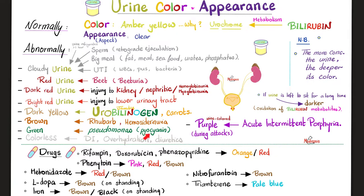Pseudomonas aeruginosa has pyocyanin pigment — it's greenish-bluish because 'cyano' means blue and 'pyo' means pus — and it can make my urine blue-green. If my urine is colorless, that's very diluted urine. This could be from drinking too much water, including psychogenic polydipsia, diabetes insipidus, or taking diuretics. If the urine is purple or wine-colored only during acute episodes, this is acute intermittent porphyria — it's an episodic condition.